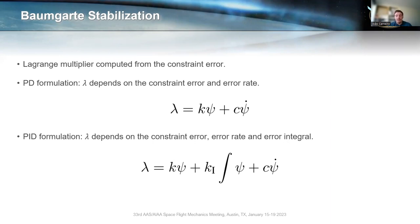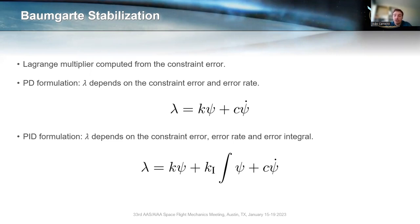Instead of calculating the Lagrange multiplier analytically, we compute it numerically from the constraint errors. We have two formulations: a proportional-derivative (PD) formulation and a proportional-integral-derivative (PID) formulation. We leverage these classical control techniques to compute the Lagrange multiplier. The lambda value for the PD formulation depends on the constraint error and error rate; for the PID formulation, it also depends on the error integral. If the system goes away from the constraint surface and the error grows, so does the Lagrange multiplier, making the constraint force larger and driving the system back to that constraint surface faster.